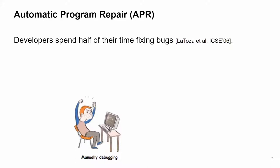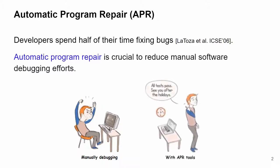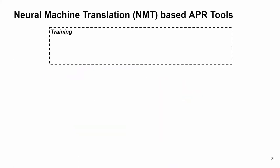Manually fixing bugs is time-consuming, as developers spend half of their time fixing them. Thus, Automatic Program Repair, which in short is APR, is crucial to reduce manual software debugging efforts. And in recent years, many neural machine translation-based APR tools have been developed.